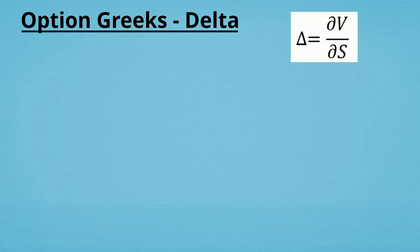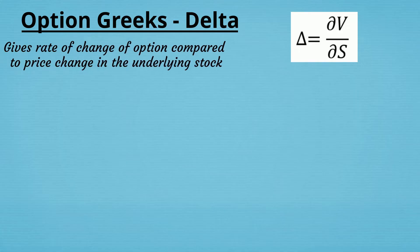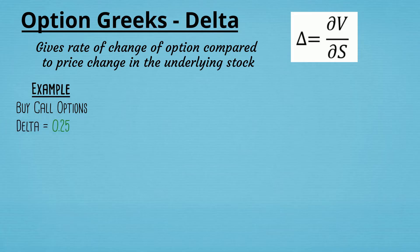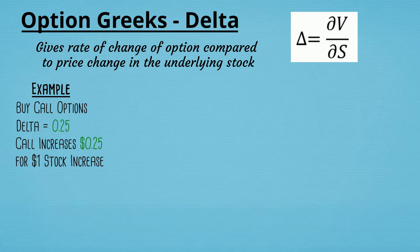From a purely mathematical perspective, Delta is the first derivative of the option price with respect to the price of the underlying stock. What it tells you is the rate of change of the option price compared to the price change in the underlying stock. For example, if you're looking at call options with a Delta of 0.25, the option price is going to change by 25 cents for every one dollar that the stock price moves.